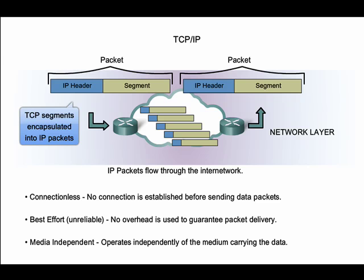Connectionless means that no connection is established between the source and destination before sending data packets. Best effort delivery means that IP does not guarantee packet delivery, so it is possible that a packet may be lost in transmission. It is the job of the transport layer to guarantee delivery. Media independent means that IP operates independently of the medium carrying the data and can be used with many different media. These characteristics greatly reduce the overhead of a packet, which allows IP to function very efficiently at the network layer.